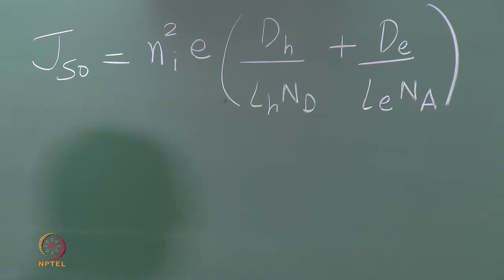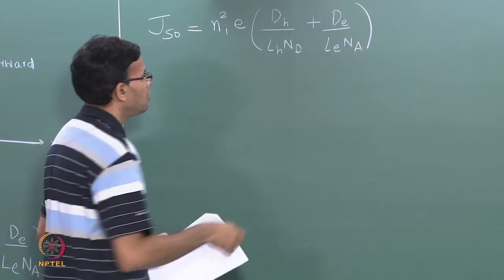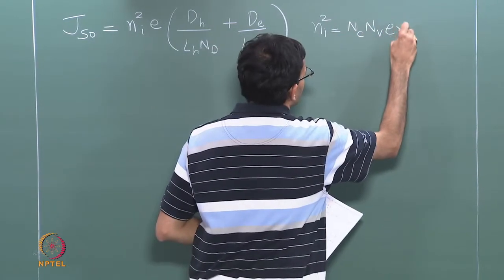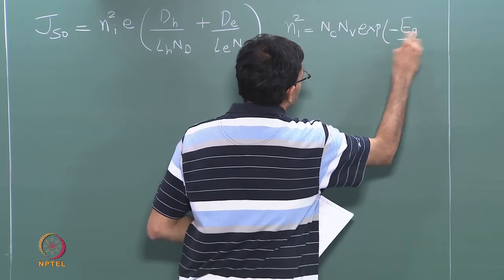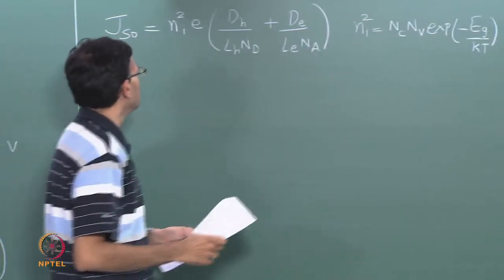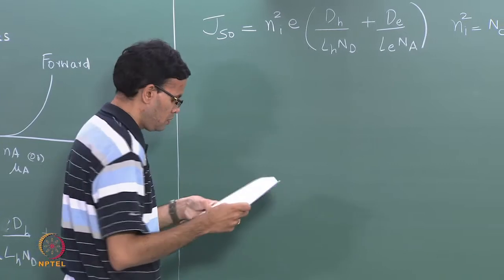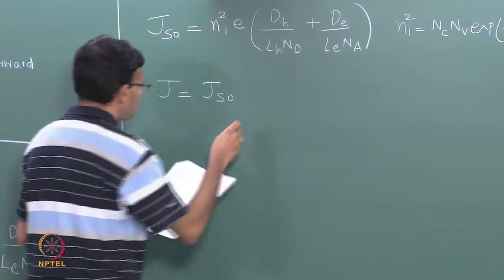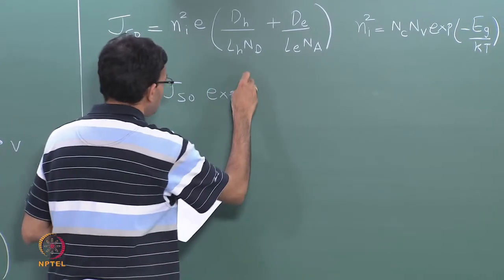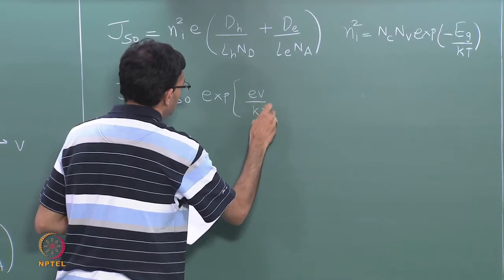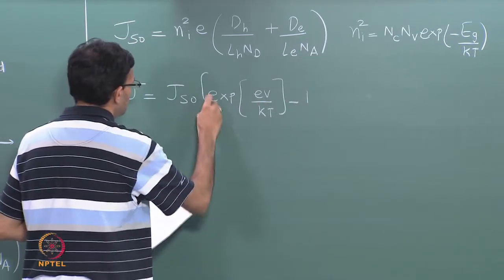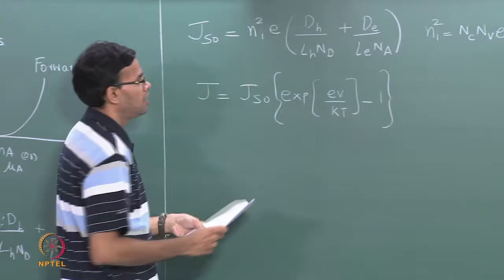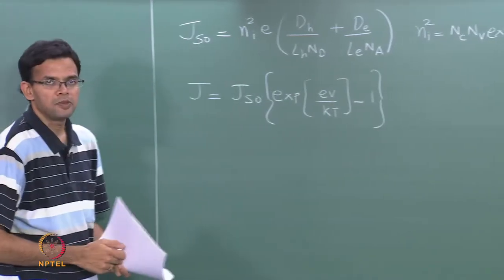n_i², the intrinsic carrier concentration, is a material property. We know that n_i² equals N_C·N_V·exp(−E_g/kT). We can substitute for n_i² in the expression for J, so that J equals J_S0·exp(eV/kT) − 1. I am going to replace n_i² with N_C·N_V·exp(−E_g/kT).